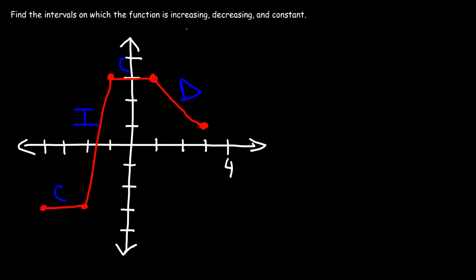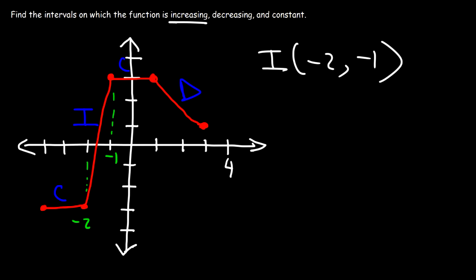So let's focus on the intervals where it's increasing first. We're going to use the x values to describe it. It's increasing starting from negative 2 and ending at negative 1, so we write negative 2 to negative 1. It doesn't include negative 2 or negative 1 because at those exact points you can't say it's increasing or constant, so we use parentheses.